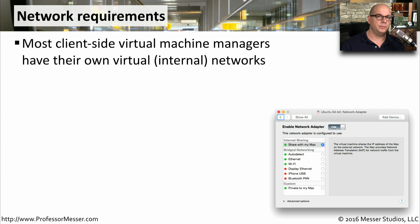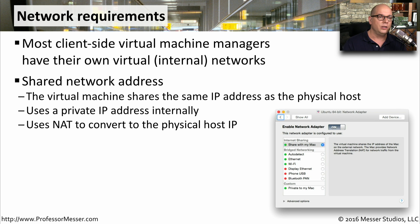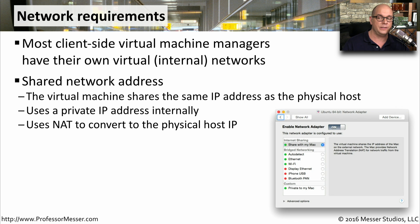Just as we have virtual operating systems that we can run in software, we can also run virtual networks, and we can build out our own networks to connect these different systems however we'd like. Most virtual machines running on our desktops have their own virtual internal networks so they can communicate with each other without communicating to the outside world. You could also configure a shared network address so that the virtual machine would have exactly the same IP address as the physical host that it's running on. It usually does a network address translation so that it's able to communicate from inside the virtual world out to the physical world.